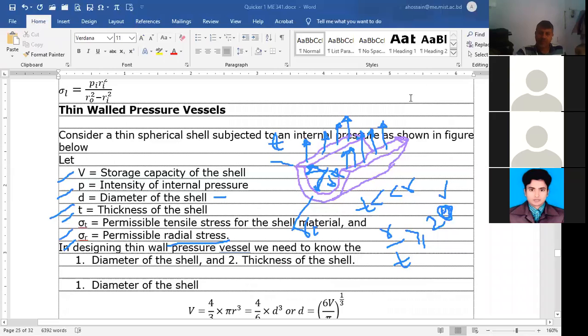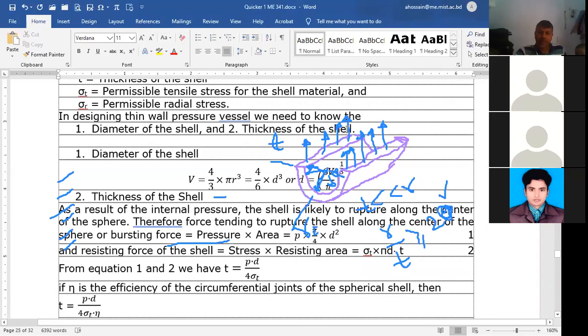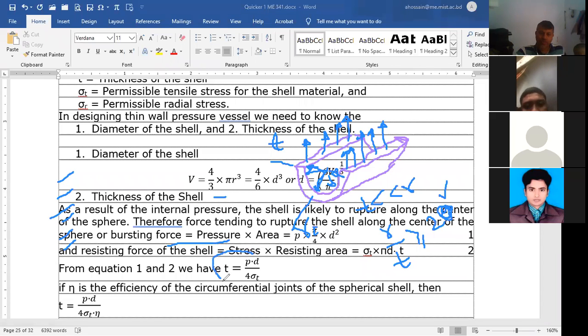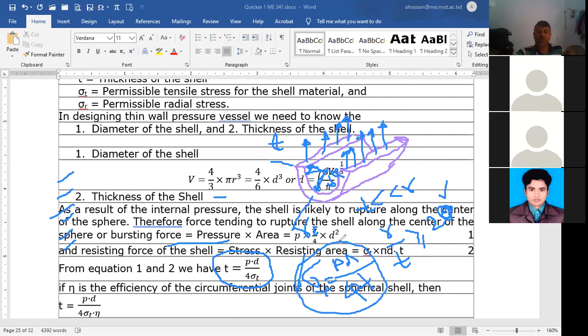For designing thin wall pressure vessels, we can easily calculate using this formula. T is equal to PD by 4 sigma_T. So sigma_T equals PD by 4T.